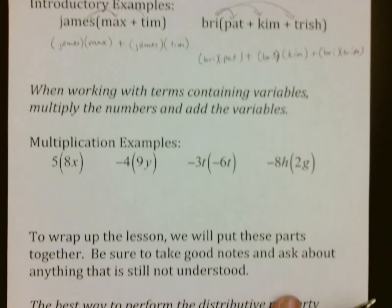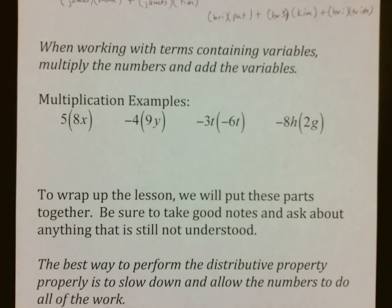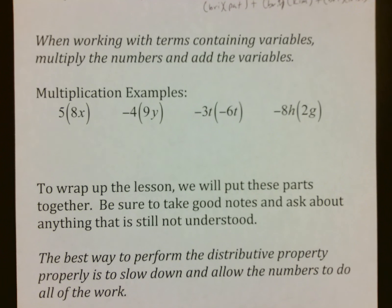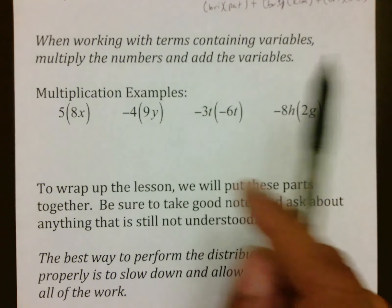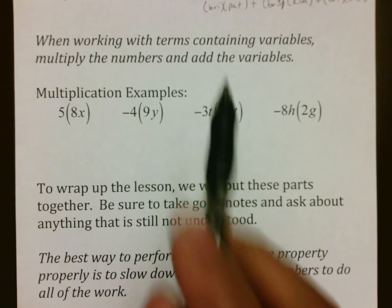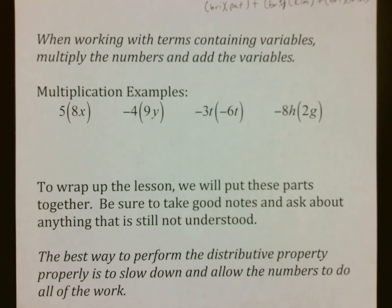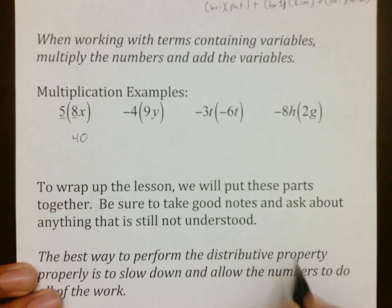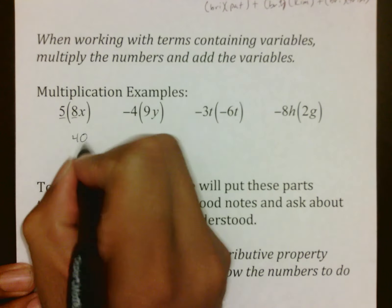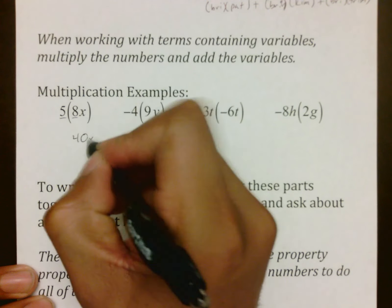You are going to be working with terms containing variables, so we have to make sure we know how to multiply them appropriately. Some multiplication examples just to show you. Whenever you are multiplying with terms containing variables, you multiply the numbers and you add the variables. You have to start sectioning off your problem into parts that you can actually work with. For example, you are going to take 5 times 8 and make 40. And then, in this multiplication, there is only 1x, so we leave 1x.